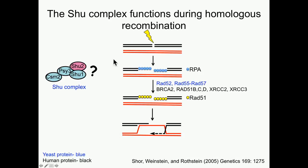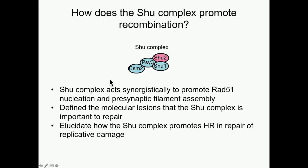We wanted to address the question of what's the role of the SHU complex and the RAD51 paralogs during homologous recombination. I'm going to show you how the SHU complex acts to synergistically promote RAD51 nucleation and presynaptic filament assembly, how we've defined the molecular lesions that the SHU complex is important to repair, and that it's important to repair DNA damage during DNA replication.